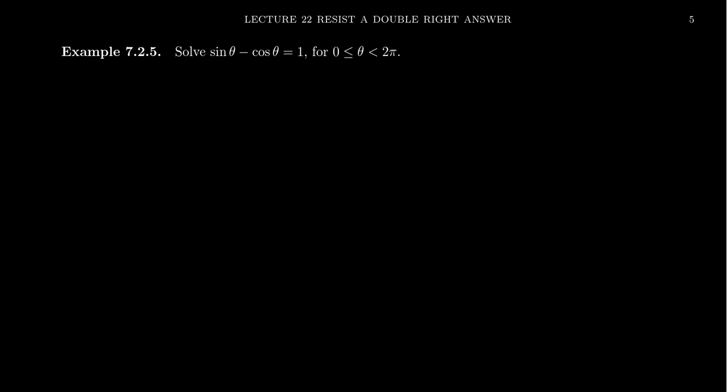How are we going to go about doing this? We're going to have to use some identities, but the identity we're going to use is not obvious at the beginning of the problem. The angles are just theta, so angle sum, angle difference, half angle, and double angle identities don't seem to make any sense here. Sum-to-product or difference-to-product identities only work when you have sine and sine or cosine and cosine — since we have a mismatch, those won't work. The key is we want to use the Pythagorean identity, though it's not obvious how yet.